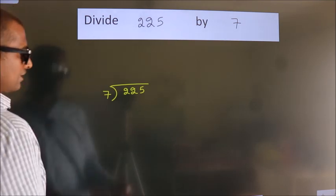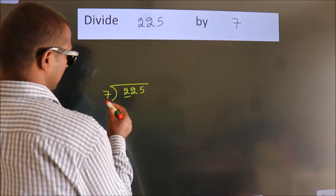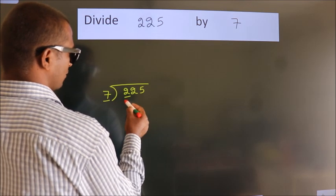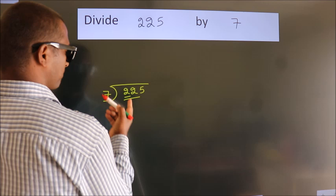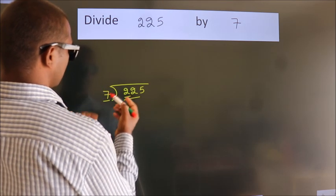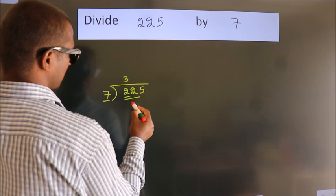Next, here we have 2. Here 7. 2 is smaller than 7, so we should take 2 numbers. 22. A number close to 22 in the 7 table is 7 threes 21.